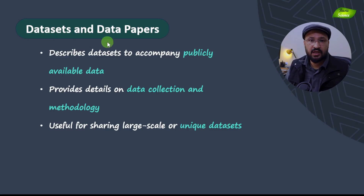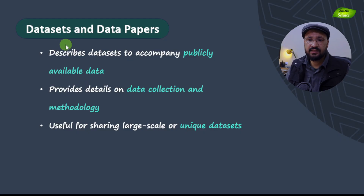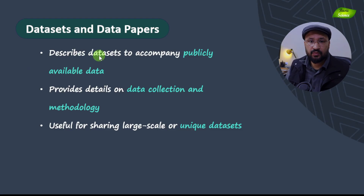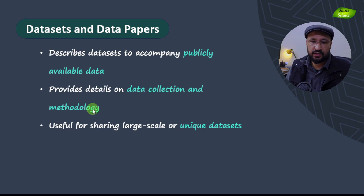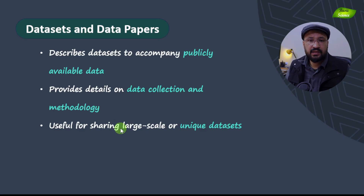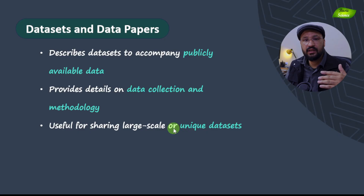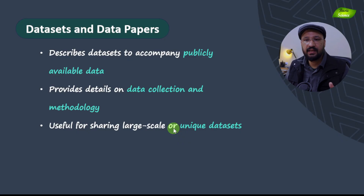The next type, which is fairly new, is data sets and data papers. If you have collected and analyzed a large amount of data, you can directly publish that data as a data set or data paper. You describe the data and make it publicly available, providing details on data collection and methodology. This provides unique data sets that other researchers can work on, making it really helpful to the broader research community.